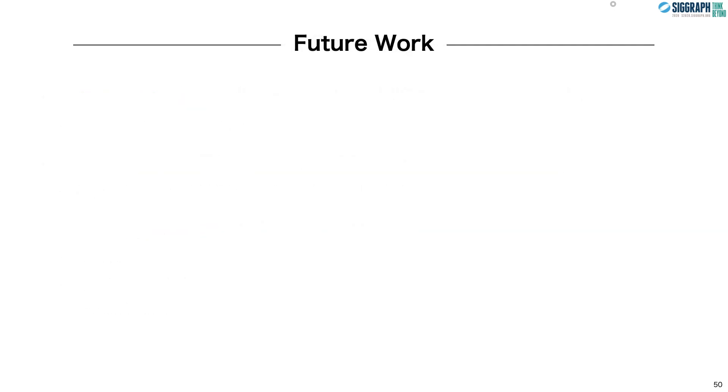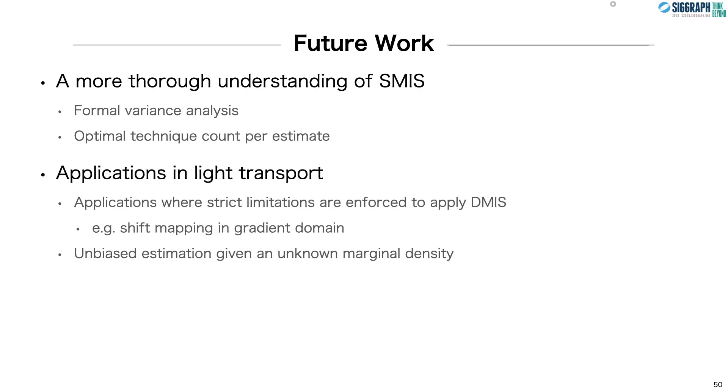It would be great to have a more thorough understanding of SMIS, including a formal variance analysis, and as the cost of weight evaluation is quadratic with the number of techniques, a way to determine the optimal number of techniques per estimate. There are also many potential applications of CMIS in light transport, including applications where strict limitations are enforced to apply DMIS, for example the deterministic shift mapping used in gradient domain methods. And applications where we want to make an unbiased estimate but have an unknown sample marginal. For these, an unknown marginal is usually a showstopper, but as we saw in the applications demonstrated, SMIS allows us to formulate an unbiased estimator even in such situations.